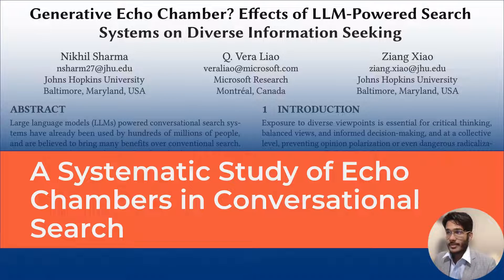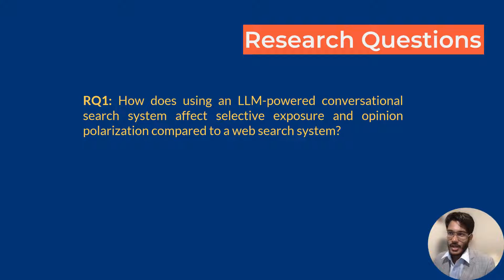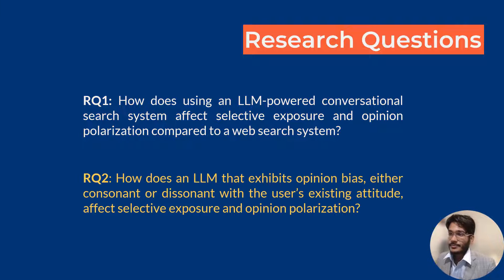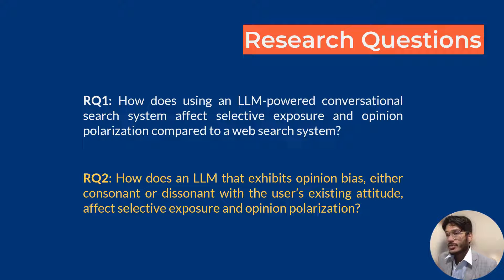Our paper does a systematic study of echo chambers in conversational search. We had two research questions. First: is there a difference between web search systems and LLM-powered conversational search systems in the context of selective exposure — the tendency for people, consciously or unconsciously, to seek out material that supports their existing attitudes — and how does this affect opinion polarization? Second: what is the effect on selective exposure and opinion polarization when these LLMs exhibit opinion bias, either consonant or dissonant with the user's existing attitude?